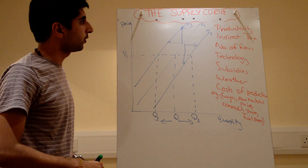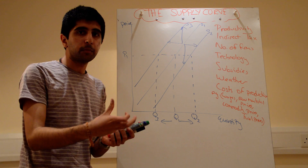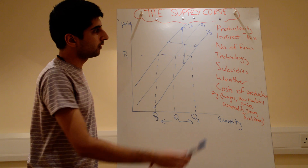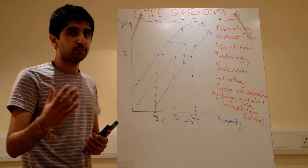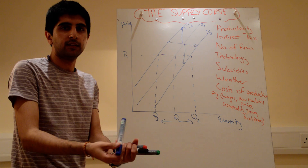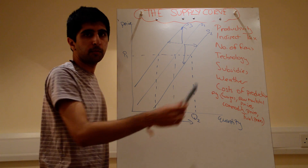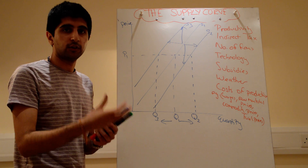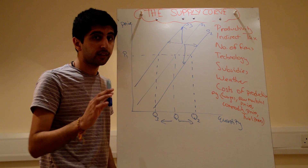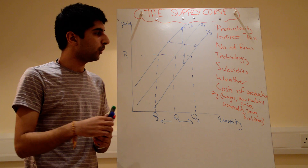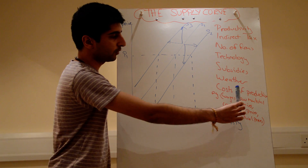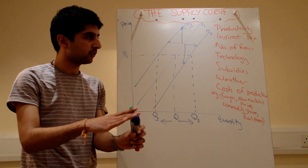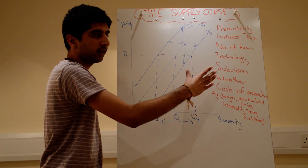An increase in productivity — workers producing more output per time period — shifts the curve to the right. An indirect tax increases the cost of production, shifting the curve to the left. More firms in the industry means more supply, shifting the curve to the right. An improvement in technology, such as more efficient capital or better machinery, shifts the curve to the right. Subsidies — money grants given by the government to reduce the cost of production — shift the curve to the right. Good weather, whether sunshine or rain depending on the crop, shifts the curve to the right. A reduction in wage costs, raw material prices, commodity prices, or fuel prices also reduces the cost of production, shifting the supply curve to the right — and vice versa.